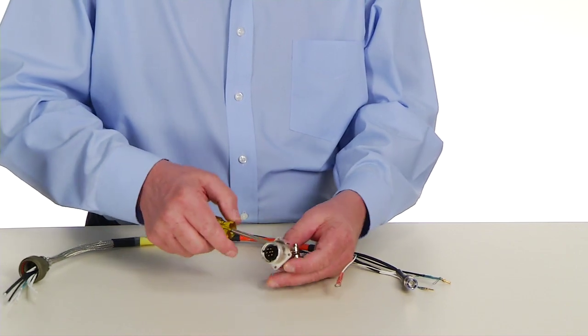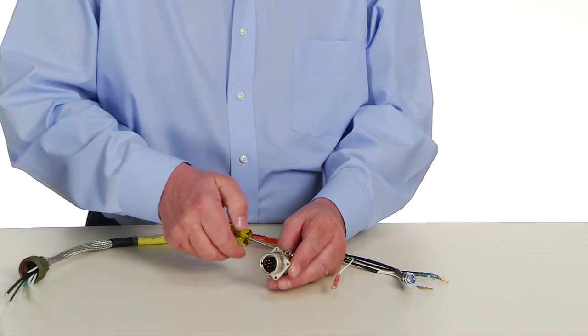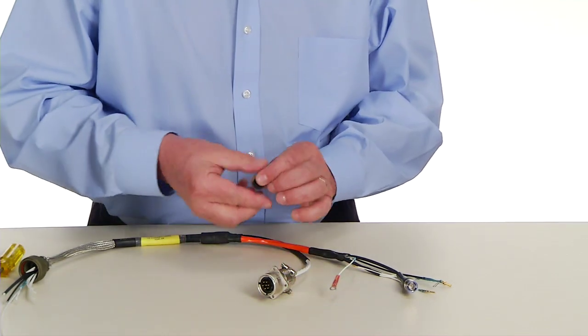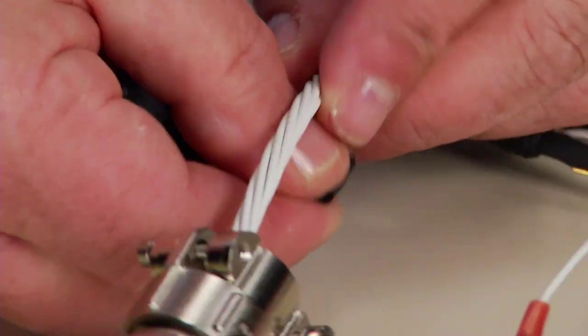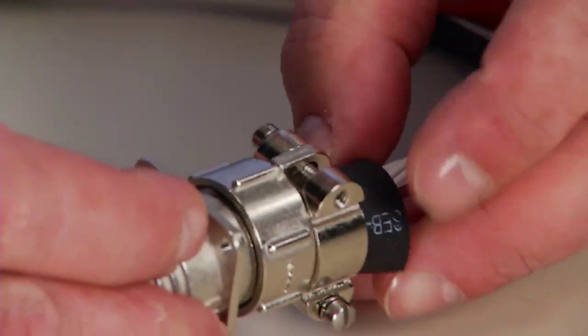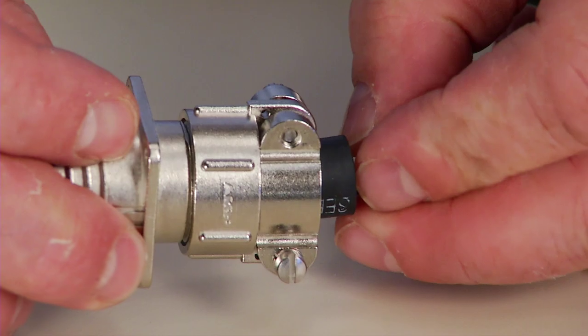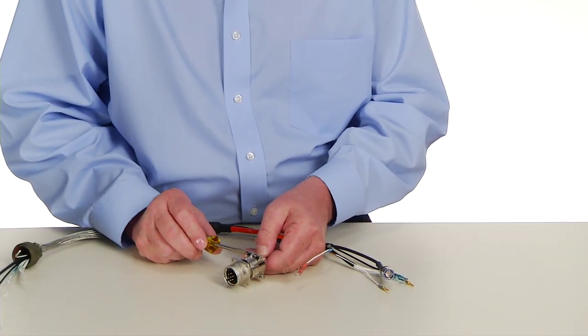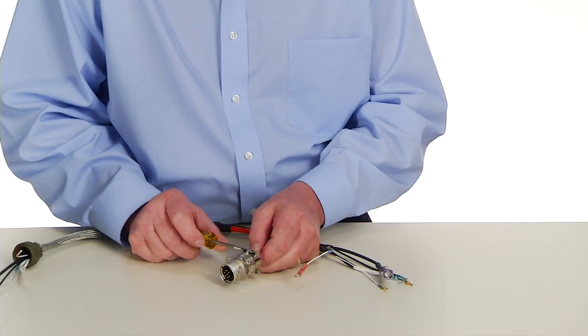Using a common screwdriver, loosen the two screws on the cable clamp of the connector. Find the side entry bushing and position around the seven wires under the cable clamp. Reassemble the cable clamp with the SEB bushing providing strain relief to the wire bundle.